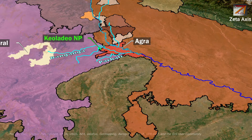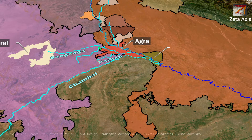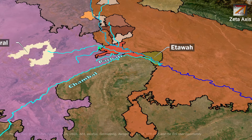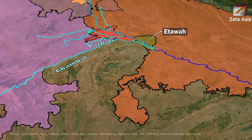From Agra, the Yamuna river enters Itawa where it meets with the Chambal river. Chambal is one of the major tributaries of the Yamuna river, and we will discuss the Chambal river later in the video in great detail.